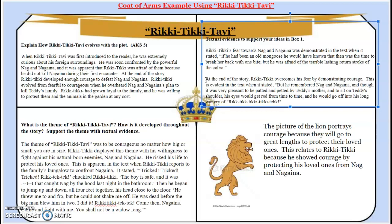Now this piece of supporting ideas states: at the end of the story, Rikki-Tikki overcomes his fear by demonstrating courage. This is evident in the text when it stated, 'But he remembered Nag and Nagaina, and though it was very pleasant to be patted and petted by Teddy's mother, and to sit on Teddy's shoulder, his eyes would get red from time to time, and he would go off into his long war cry.' So that does show you how Rikki-Tikki goes from being fearful to courageous.